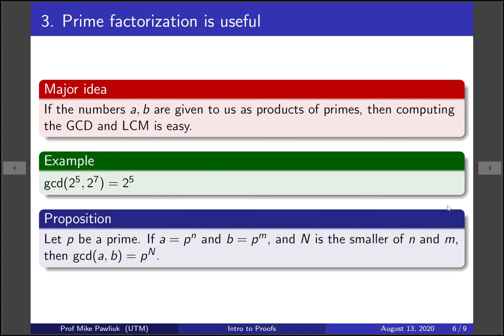So in the previous example, p was 2, n was 5, m was 7, and so the GCD was 2 to the smaller power, 5.